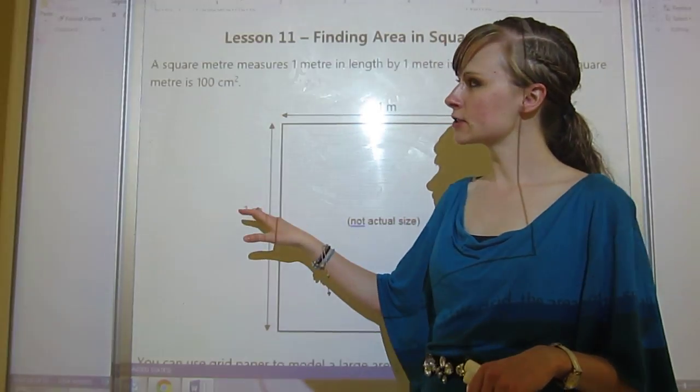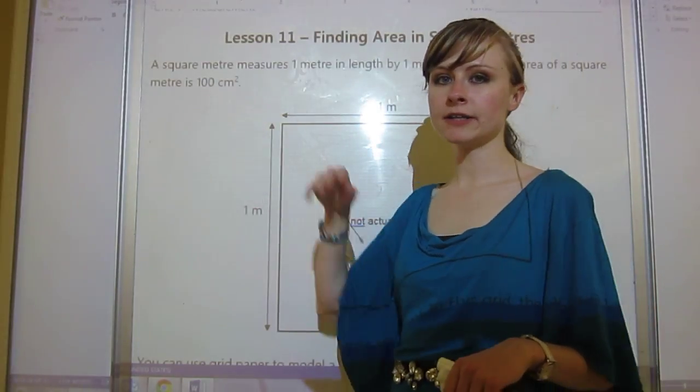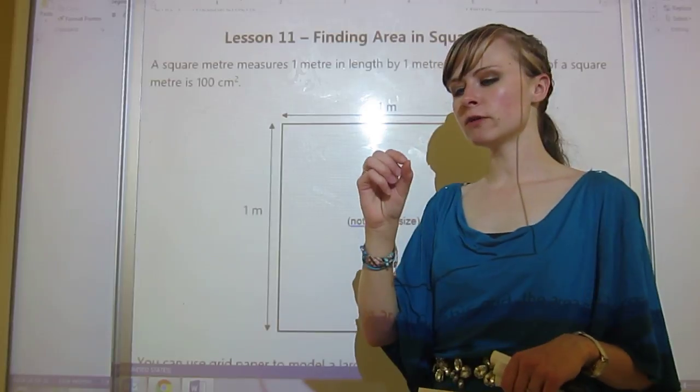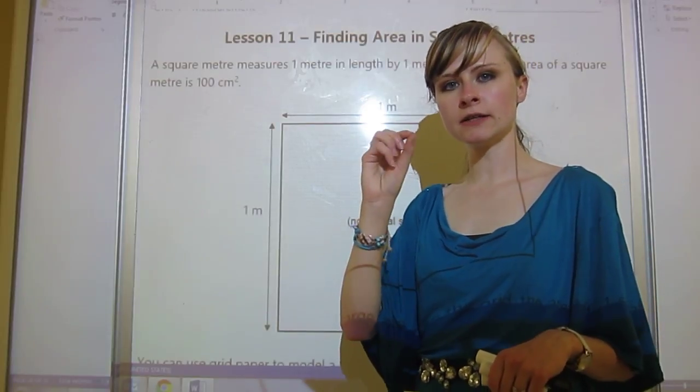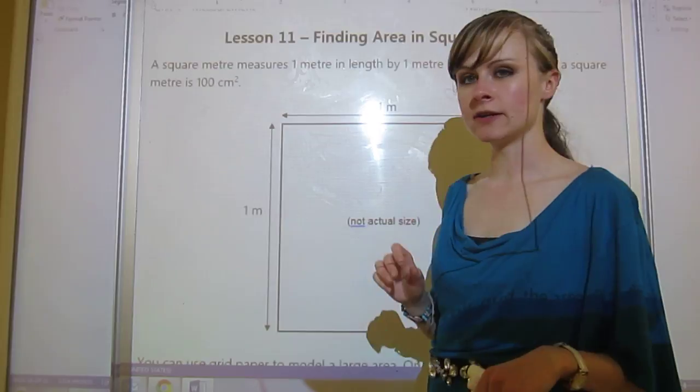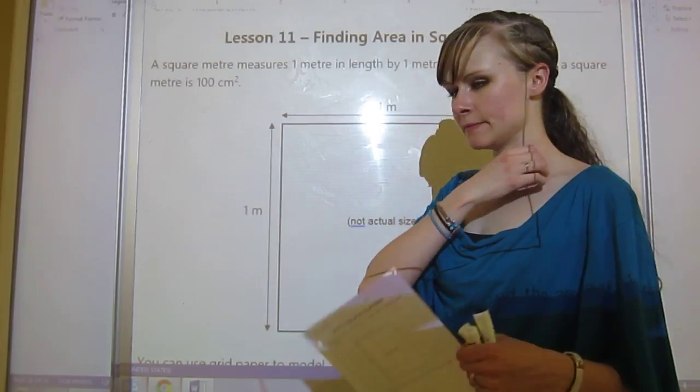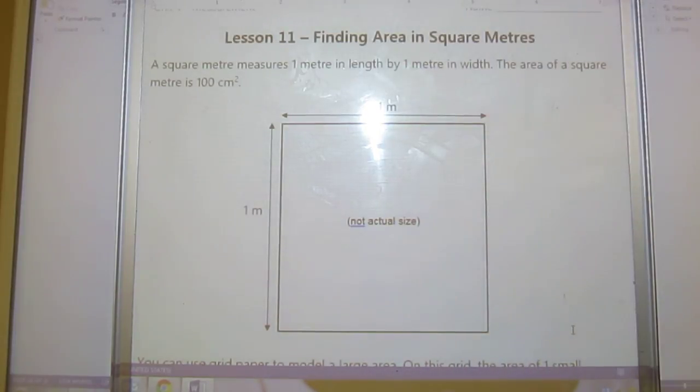One meter squared is also 100 centimeters squared. So you could fit 100 of those centimeter squares inside of a meter squared. That's the first thing that you need to know.